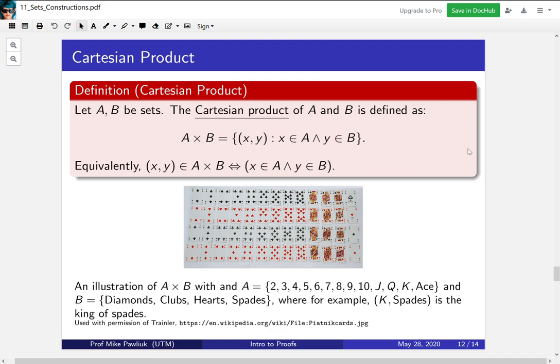And let's let B be the collection of suits: diamonds, clubs, hearts, and spades. So for example, K spades is the pair where the first coordinate is the king. The second coordinate is the suit spades. So this will represent the king of spades. The Cartesian product A cross B will represent always to take a rank and always to take a suit. So it will give us all 52 combinations.